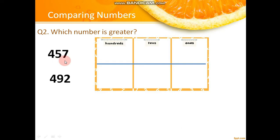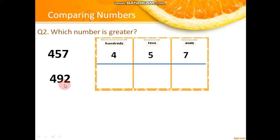Now look at question number two: which number is greater? Put these numbers into a place value chart. The first number is 457 — four hundreds, five tens, and seven ones. The second number is 492 — four hundreds, nine tens, and two ones. Now we have to compare the numbers.